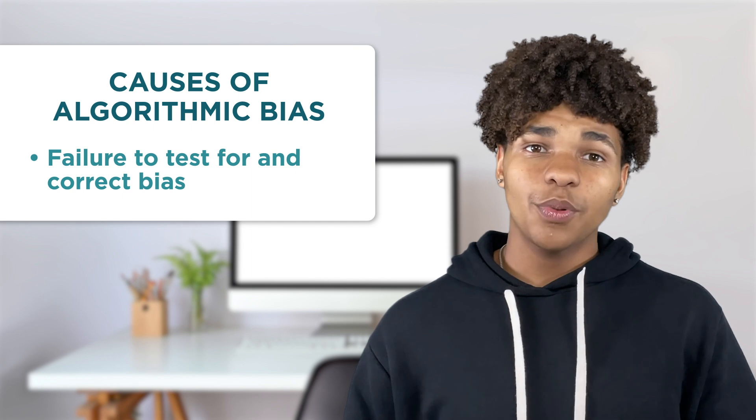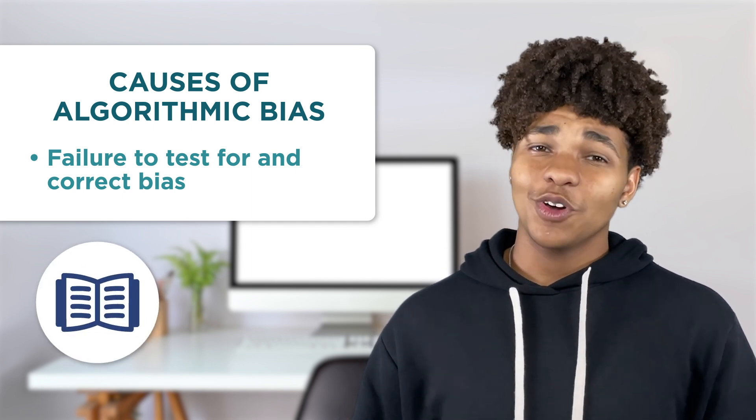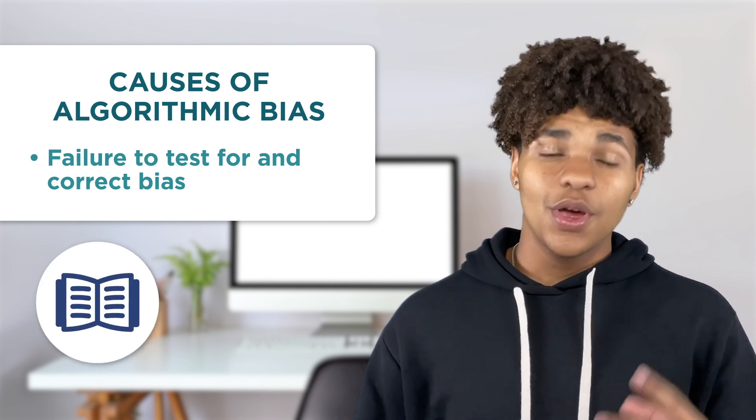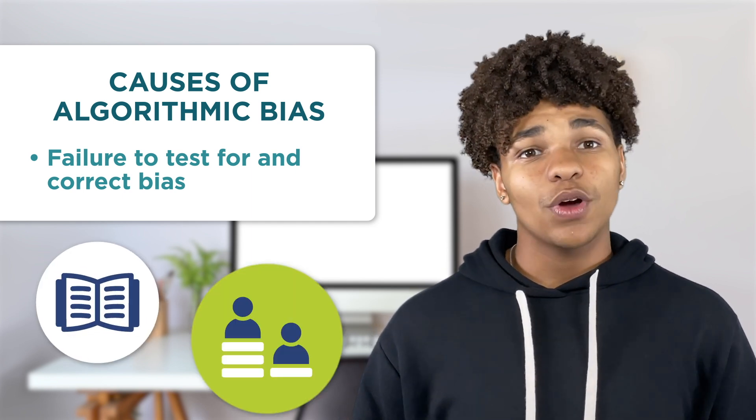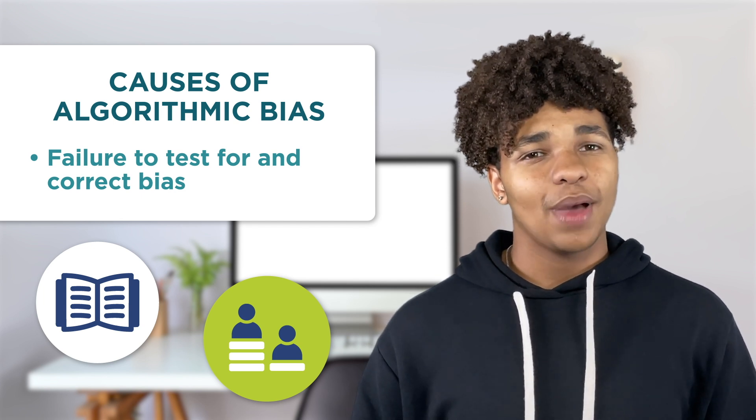For example, maybe all the characters in a story an AI creates have European names, or an AI program recommends only lower-paying jobs to people of certain ethnic backgrounds. Algorithmic bias can spread stereotypes and lead to unfair treatment of people.